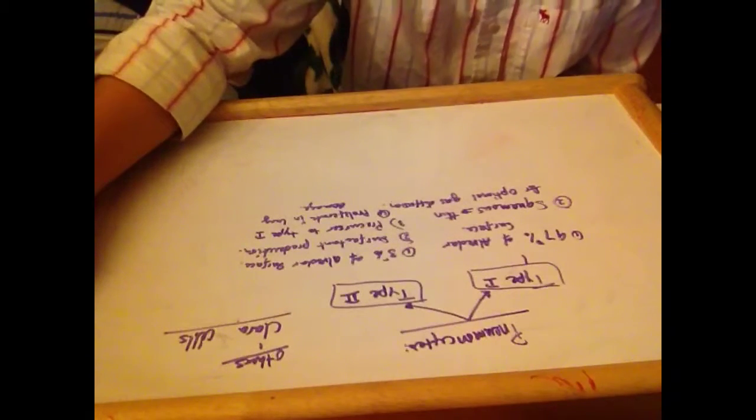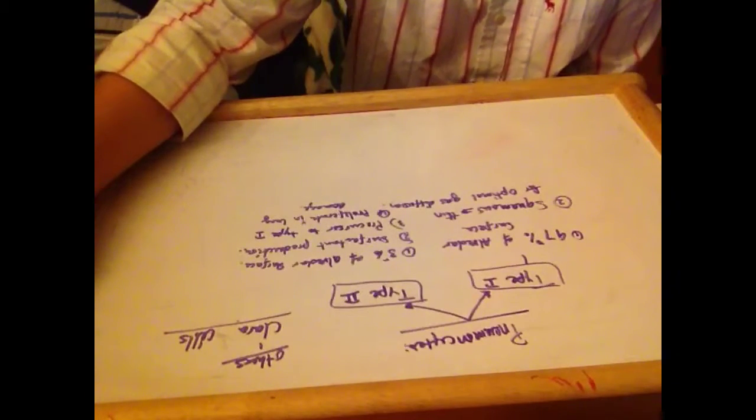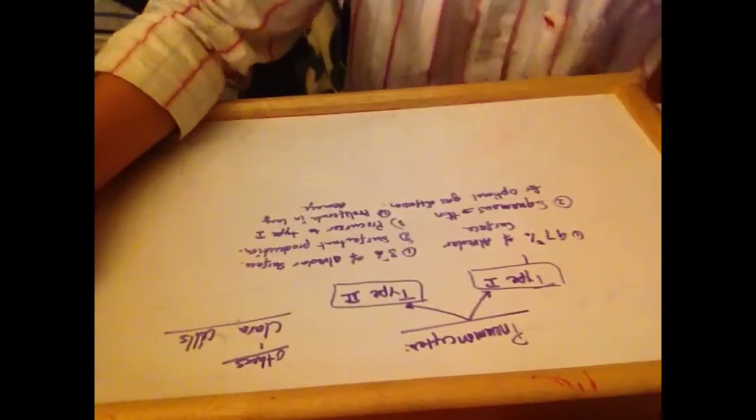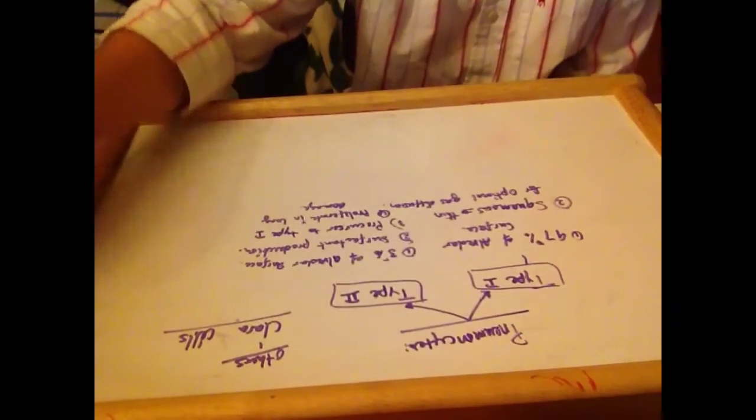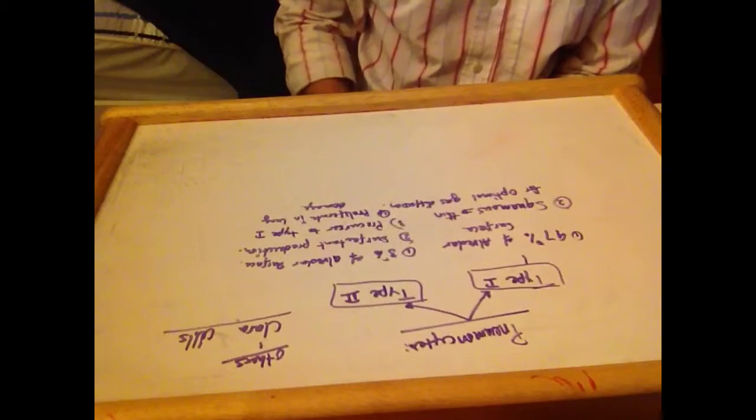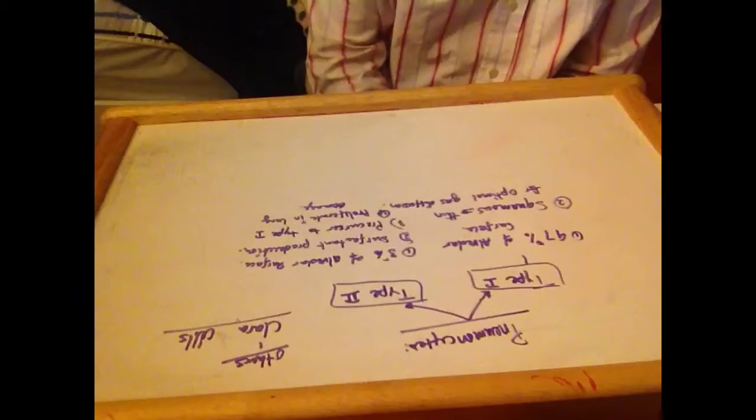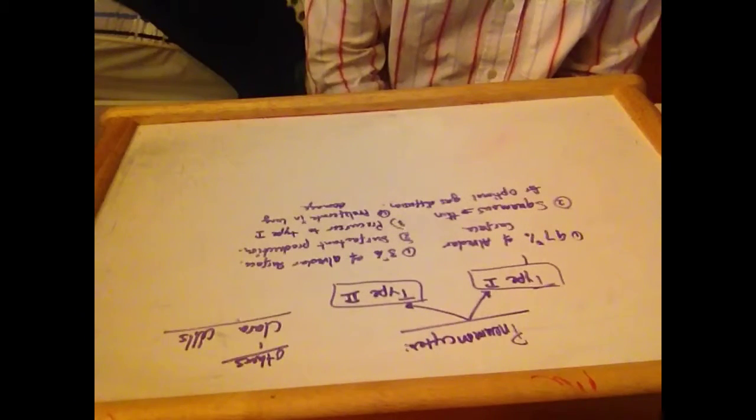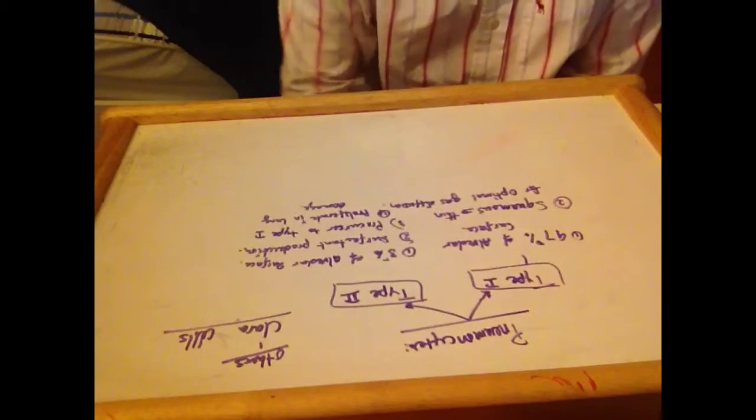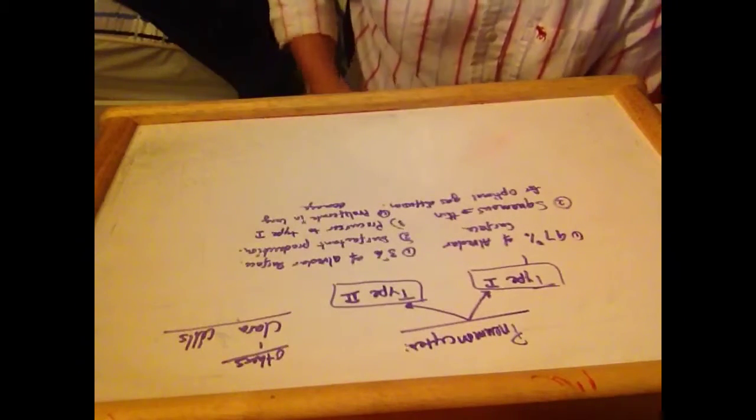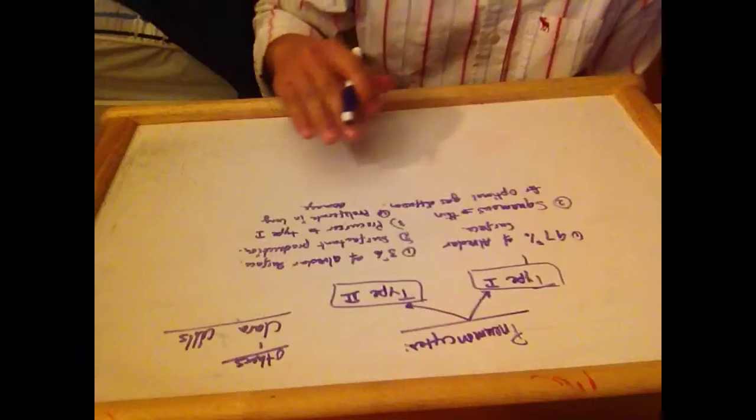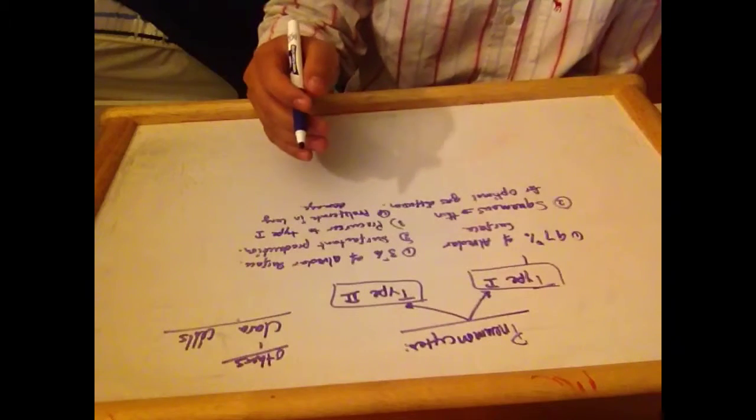Type 1 Pneumocytes consists of 95% of the alveolar surface. It lines 97% of the alveoli. So it's squamous and thinned, which is for optimal gas diffusion.